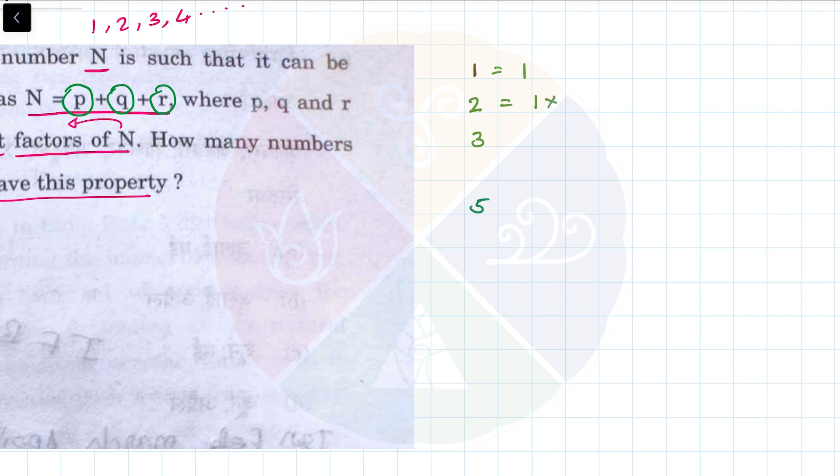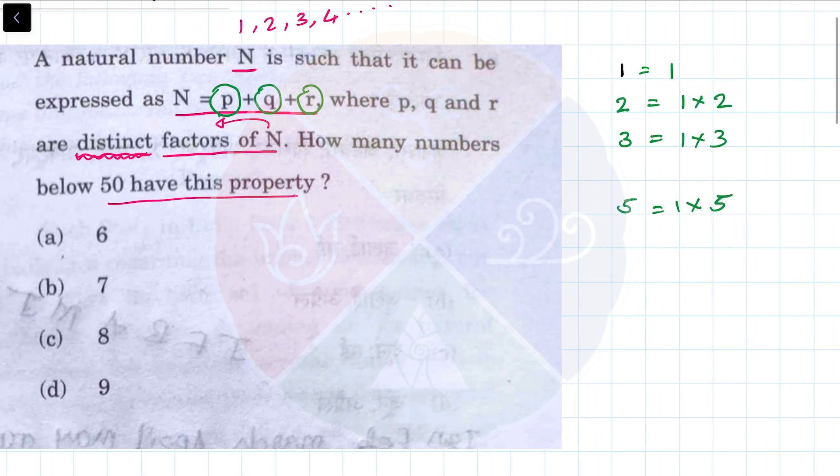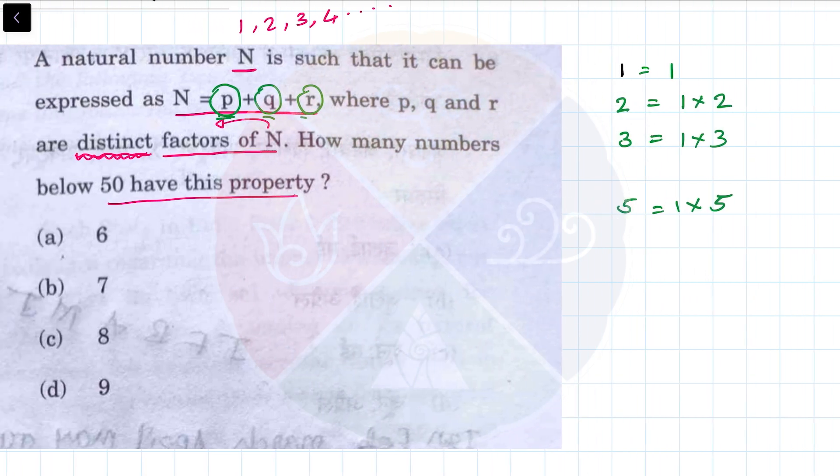Prime numbers only have two factors. For 2: 1 and 2; for 3: 1 and 3; for 5: 1 and 5. They also cannot be used because we need at least three different factors. So all the prime numbers are eliminated. Basically we are looking for composite numbers.